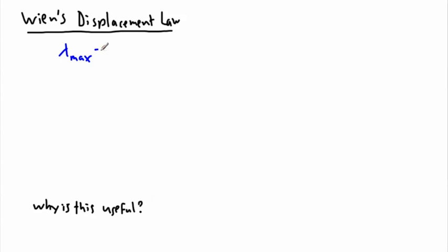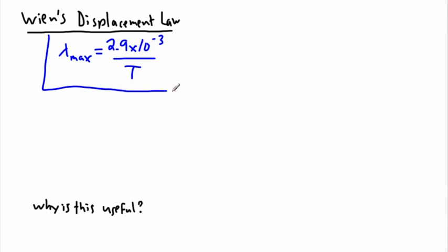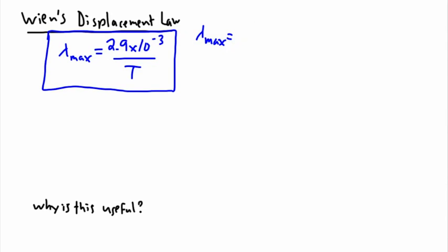We're going to define it as lambda max equals — and this is empirical, it's got a number — so 2.9 times 10 to the 3, divided by T. And this is Wien's Displacement Law. So let's define everything here. Lambda max is the wavelength associated with the maximum intensity. That's more accurate.